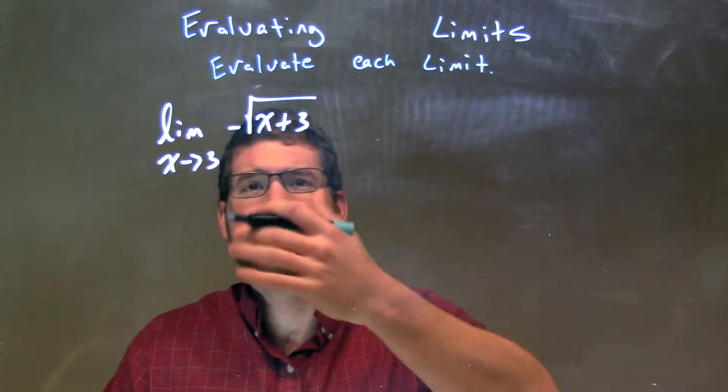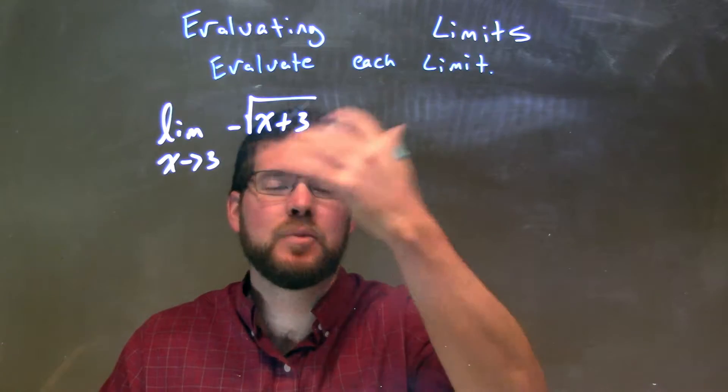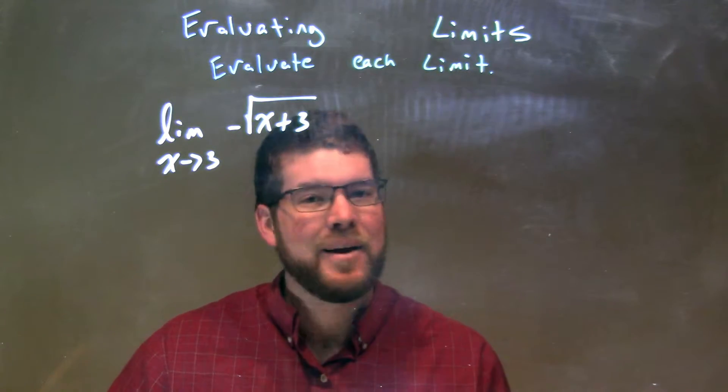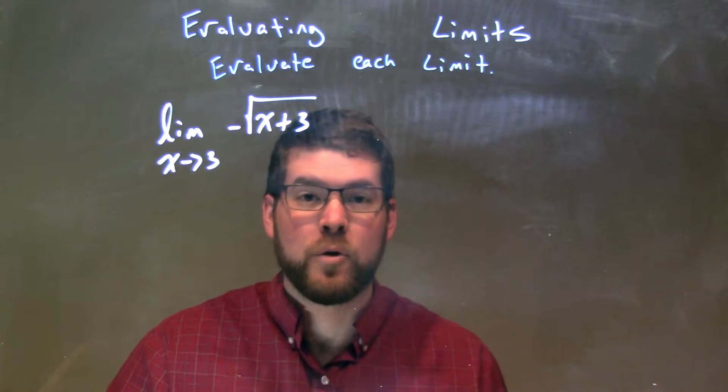So since 3 is going to exist in our domain, because 3 plus 3 is 6, we can take the square root of 6, right? We're not taking the square root of any negative here. We can directly plug in 3 for x.